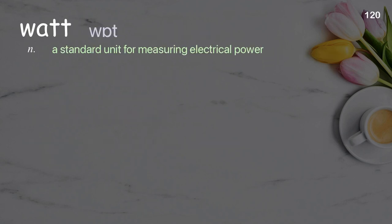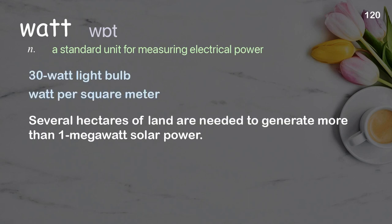Watt: a standard unit for measuring electrical power. Examples: 30-watt light bulb, watt per square meter. Several hectares of land are needed to generate more than one megawatt of solar power.